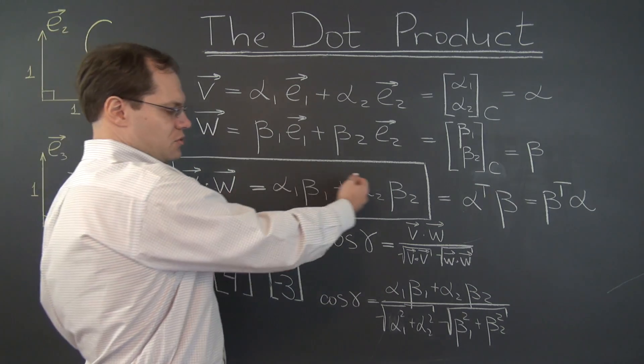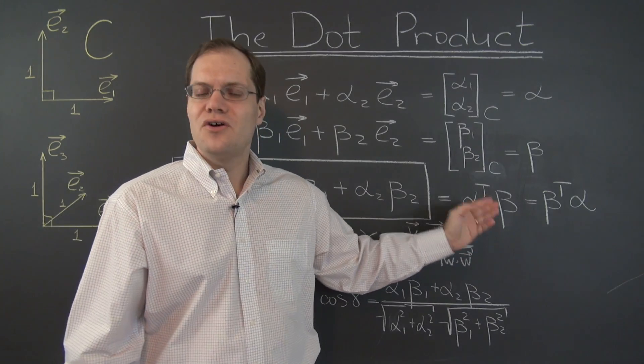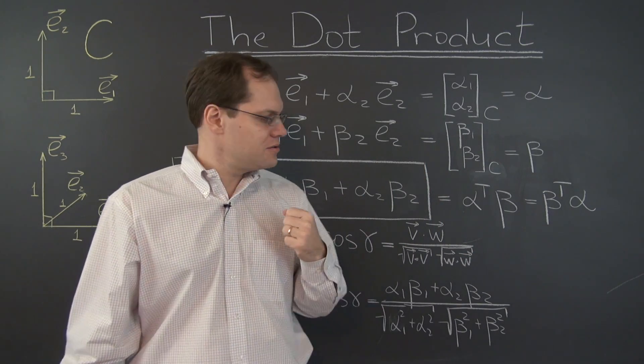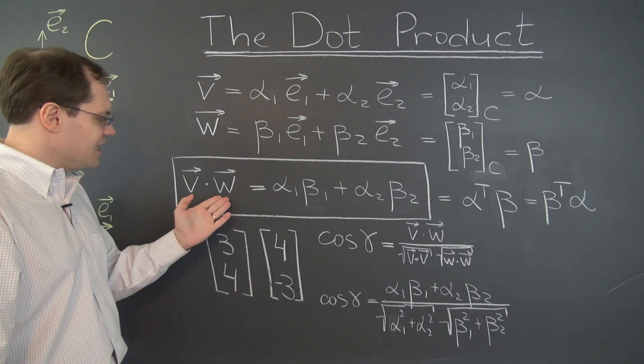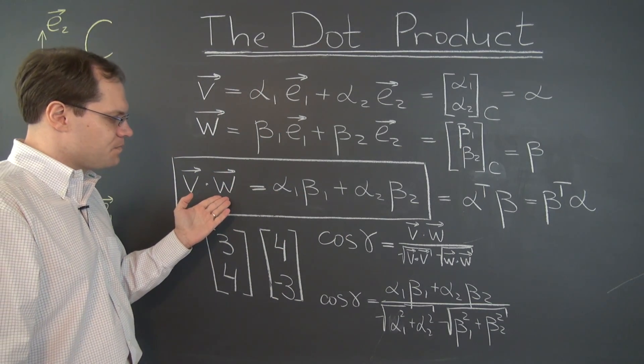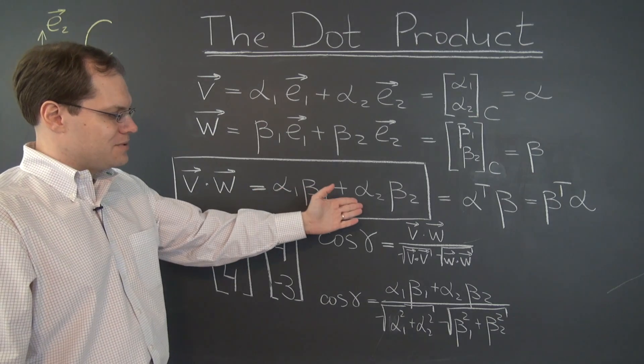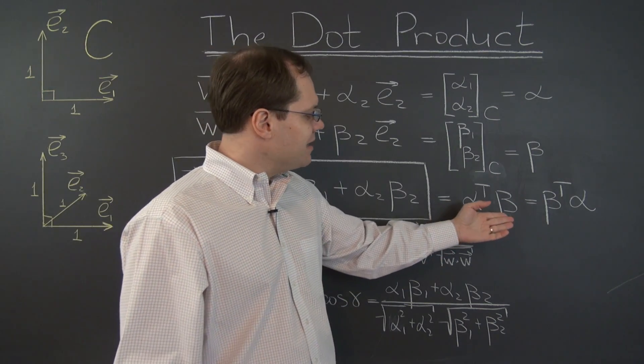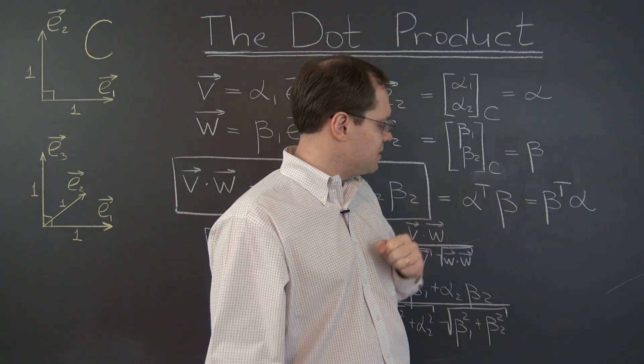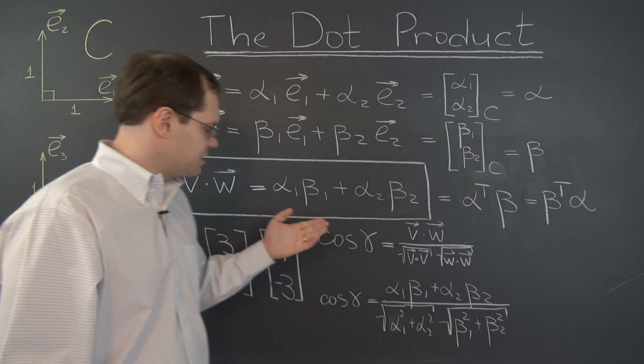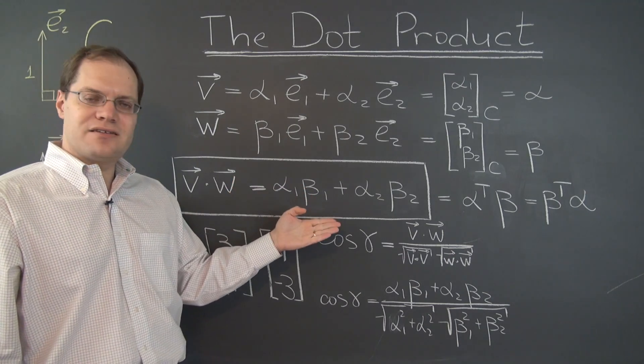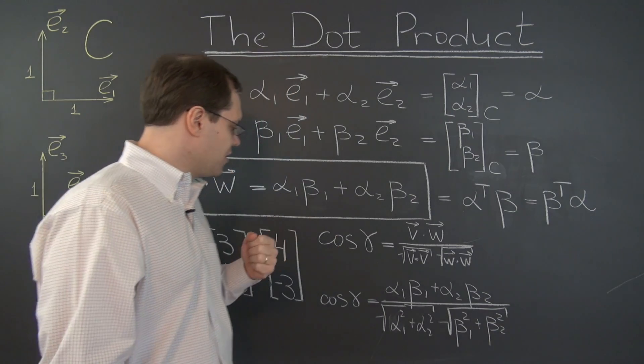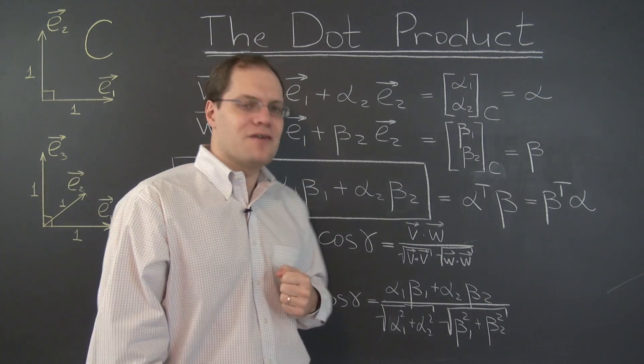Of course, I also want to point out that this formula is consistent with what we discovered to be the expression for the length squared of a vector. Because if you use the same vector v for w, you'll have alpha1 squared plus alpha2 squared, so that special case also works. And that of course both of these expressions would become alpha transpose alpha. So this expression is consistent with the expression that we have discovered previously for the length squared of a vector.